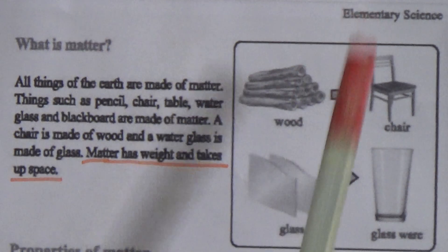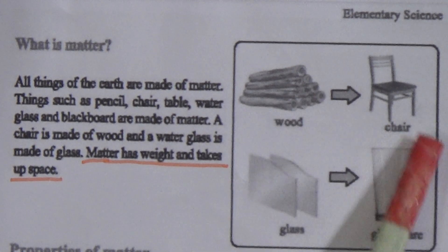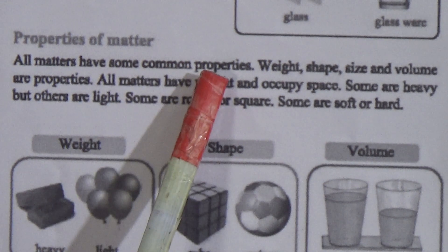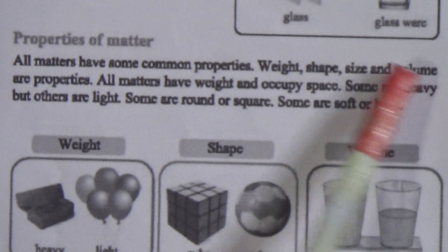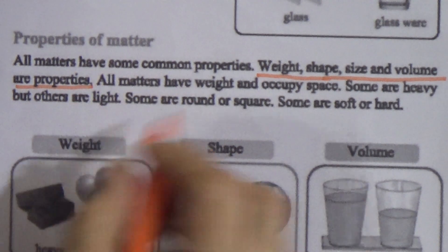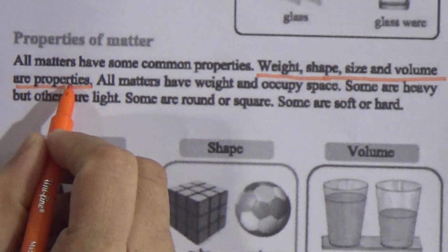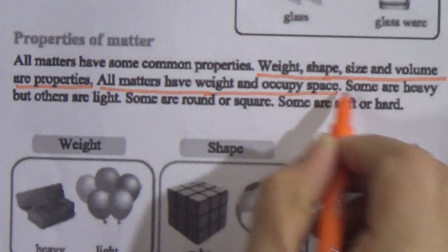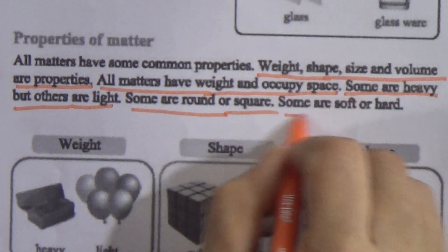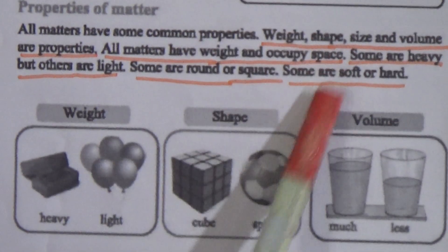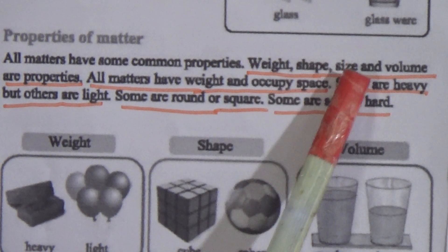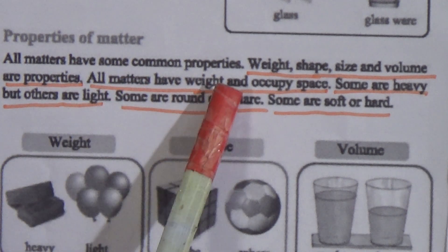Now, properties of matter. All matters have some common properties — weight, shape, size, and volume are properties. Underline this line and memorize it properly. All matters have weight and occupy space. Some are heavy but others are light. Some are round or square, and some are soft or hard. This is very important for question and answer: weight, shape, size, and volume are the properties of matter.